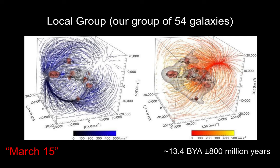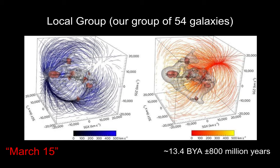Our local group really started to form about March 15th — the Ides of March. Our local group, 54 galaxies, all formed at about the same time. The Milky Way is one of them. That's 13.4 billion years ago, give or take about 800 million years.